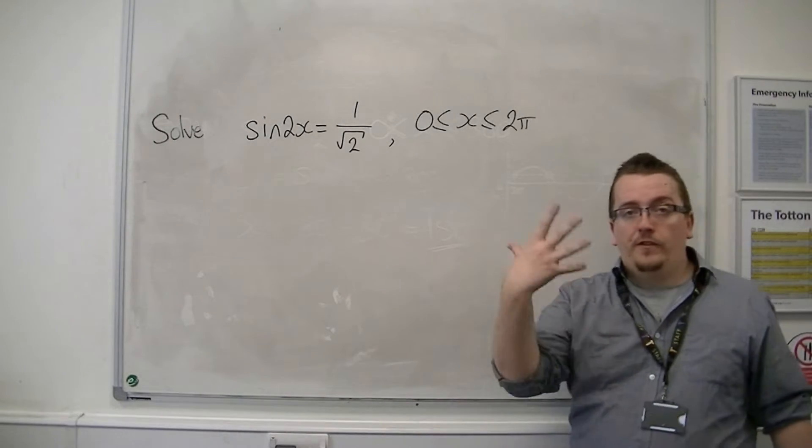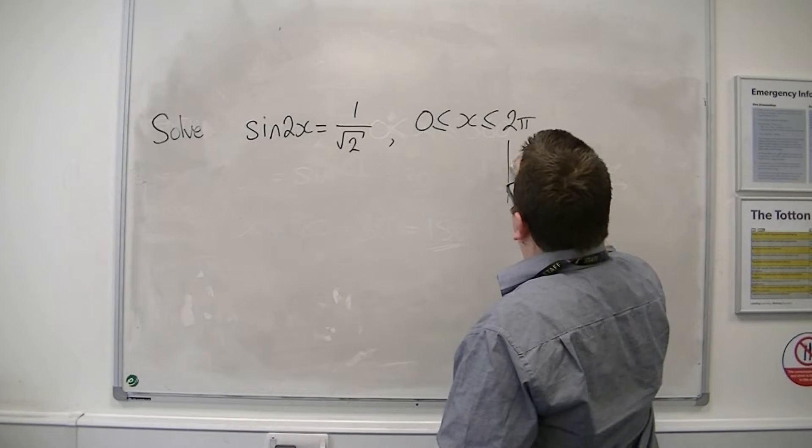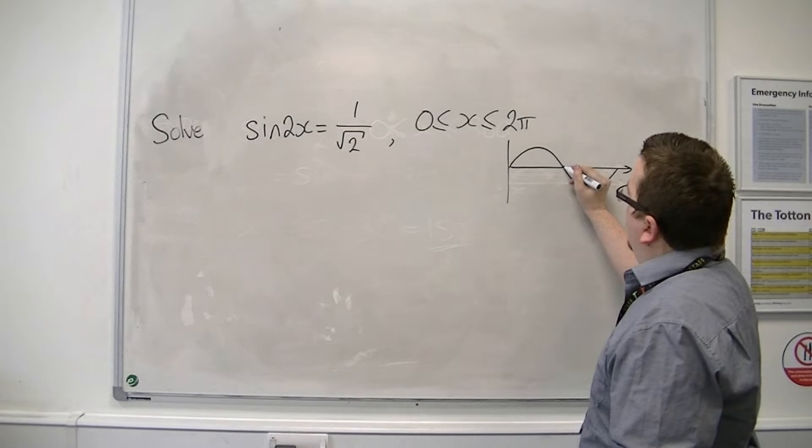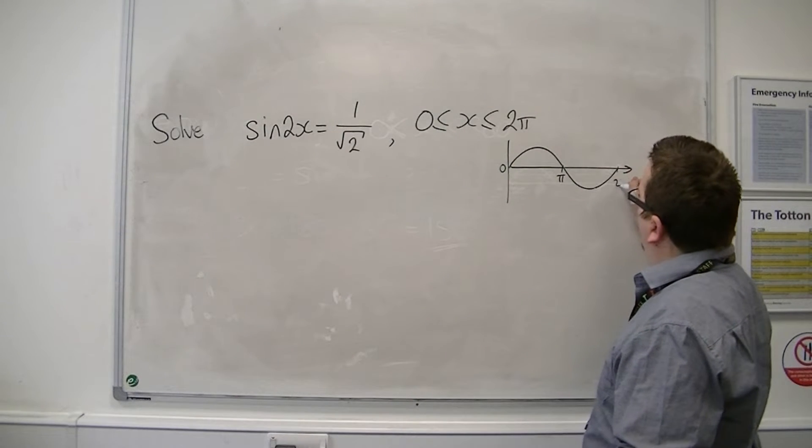So like in the first example, we sketch the sine curve. And this time, because we're in radians, we're going 0, pi, 2 pi.